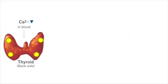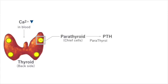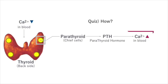When the calcium concentration in the blood becomes low, the parathyroid glands secrete parathyroid hormone. PTH works to increase the calcium concentration in the blood.